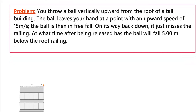The problem statement says: you throw a ball vertically upward from the roof of a tall building. The ball leaves your hand with an upward speed of 15 meters per second and is then in free fall. On its way back down, it just misses the railing. You have to find at what time after being released the ball will fall 5 meters below the roof railing.